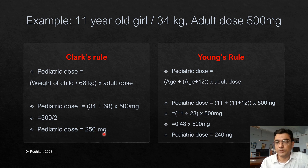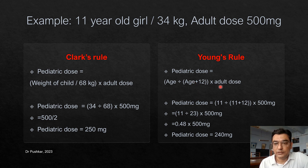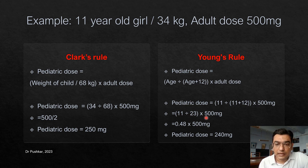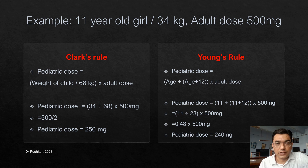Clark's Rule gives a pediatric dose of 250 mg. Applying Young's Rule to the same child: 11 divided by (11 plus 12), multiplied by 500 mg — that is 11 divided by 23, multiplied by 500 mg — giving approximately 240 mg. These doses are almost similar, so you can give the child 250 mg of the medicine.